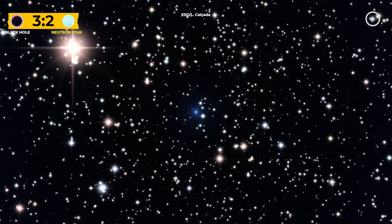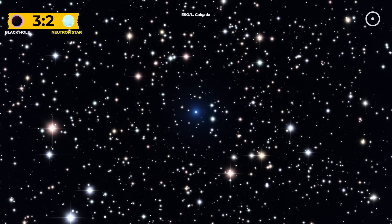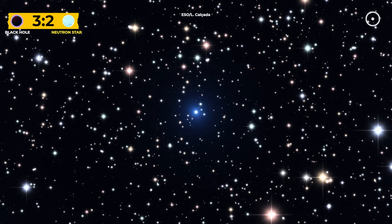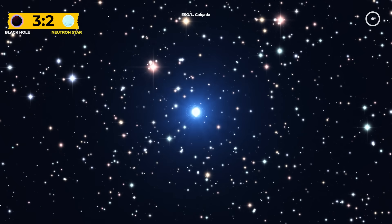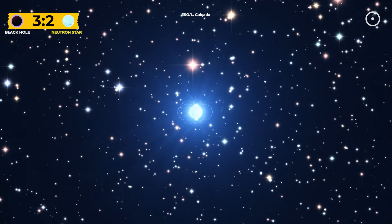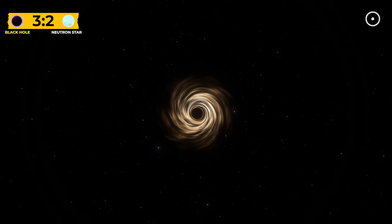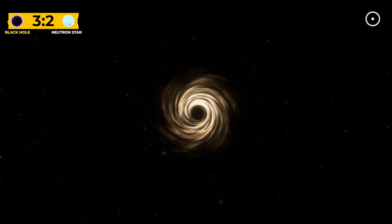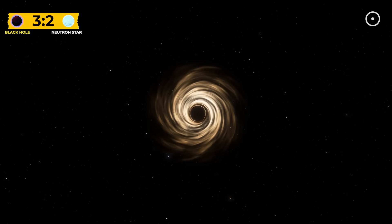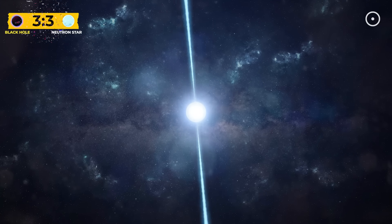And here's something wild. Neutron stars are the universe's most precise timepieces. Their rotation is more stable than our best atomic clocks. We use them for navigation in deep space. Black holes? They mostly sit there being quietly terrifying. Though their ability to completely warp space and time is pretty weird too. So this one goes to neutron stars.